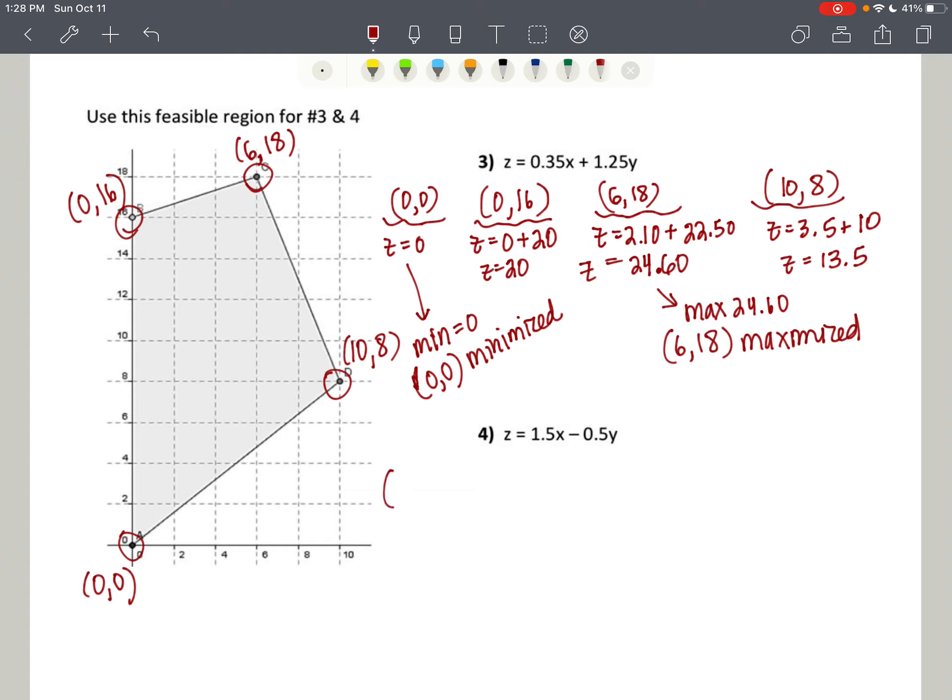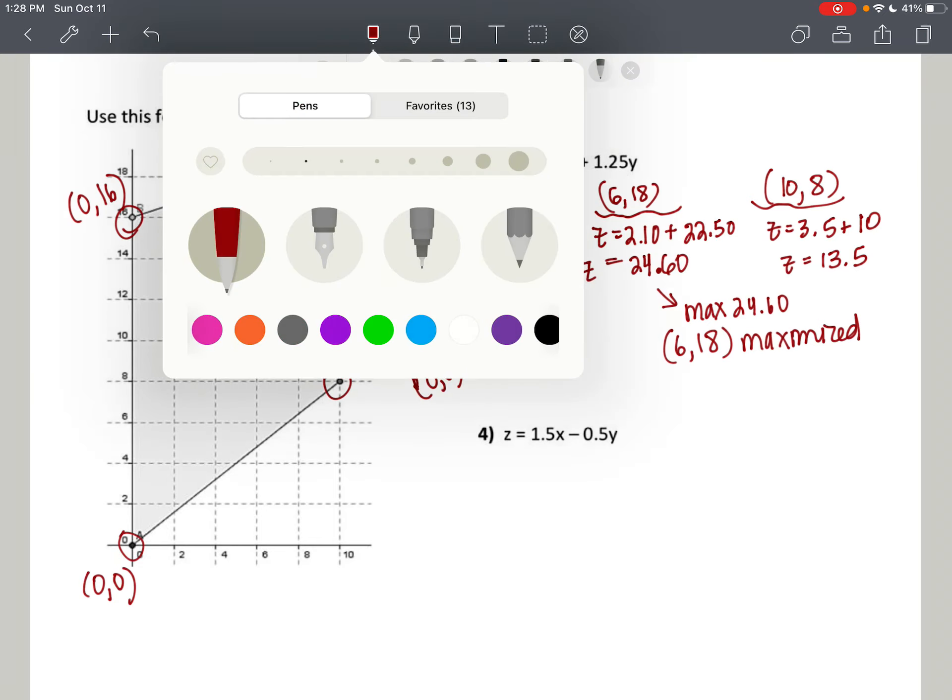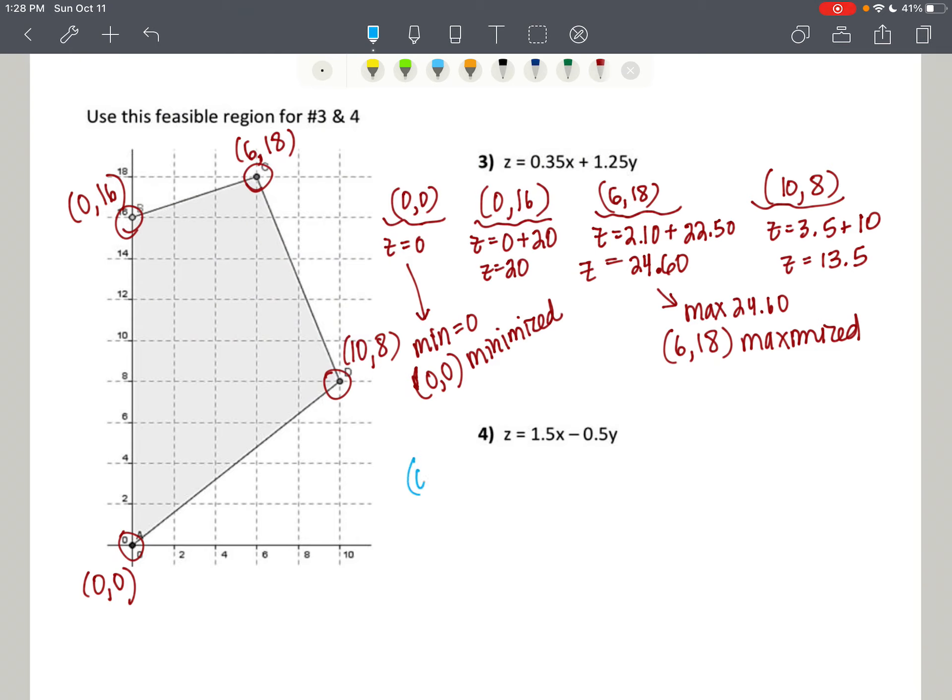Number 4. Again, we have... Let's change our color here. So, 0, 0. So when we put a 0 in, we get 0 minus 0, which is 0. And then our next ordered pair is 0, 16. 0 minus 1 half times 16 is 8. So that would be negative 8. And then we have 6, 18. And 3 halves times 6 is 9. And then half of 18 is 9. So that's going to be 9 minus 9 is 0.